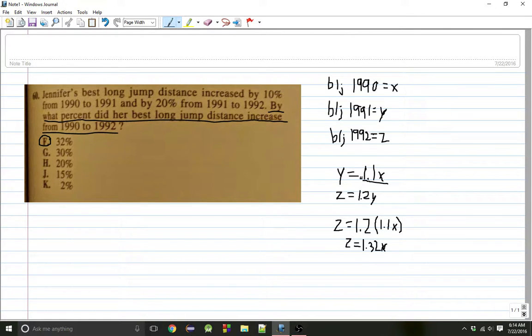Don't put it as Y equals 0.1X. You're going to get this wrong answer. You're going to get K instead. I did that the first time, and then I realized my mistake. It's 1.1X. Because when we increase by 10%, that means that it's becoming 110% of what it was in the past.